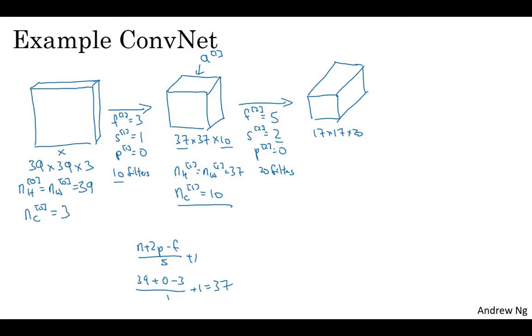This time will be 17 by 17 by 20. Notice that because you're now using a stride of 2, the dimension has shrunk much faster. 37 by 37 has gone down in size by slightly more than a factor of 2 to 17 by 17. And because you're using 20 filters, the number of channels now is 20. So this activation A2 would be that dimension: n_H2 equals n_W2 equals 17 and n_C2 equals 20.